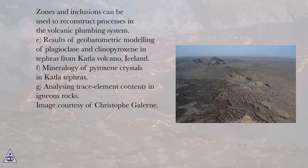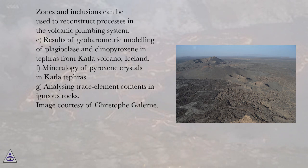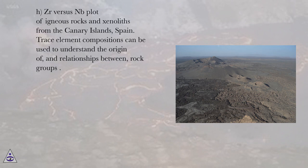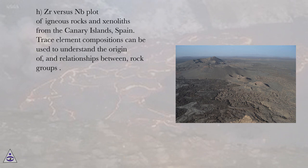E: Results of geobarometric modeling of plagioclase and clinopyroxene in tephras from Katla Volcano, Iceland. F: Mineralogy of pyroxene crystals in Katla tephras. G: Analyzing trace element contents in igneous rocks (image courtesy of Christoph Gellern). H: Zr vs. Nb plot of igneous rocks and xenoliths from the Canary Islands, Spain. Trace element compositions can be used to understand the origin of, and relationships between, rock groups.